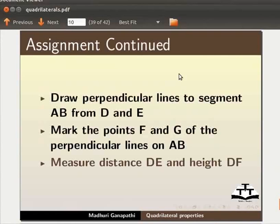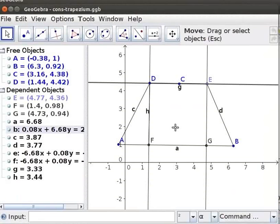Mark the Points F and G of the Perpendicular Lines on AB. Measure Distance DE and Height DF. The Output of the Assignment should look like this.